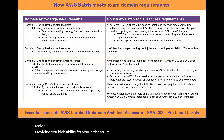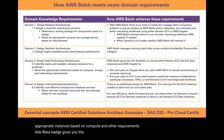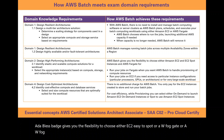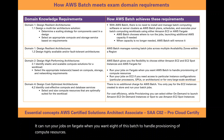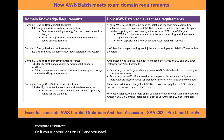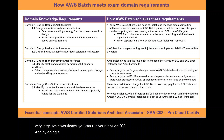From domain 2, you are required to design high performing architectures and select appropriate instances based on compute and other requirements. AWS Batch gives you the flexibility to choose either EC2, EC2 Spot, AWS Fargate, or AWS Fargate Spot. It can run your jobs on Fargate when you want AWS Batch to handle provisioning of compute resources, or if you run your jobs on EC2 and need access to particular instance configurations or very large scale workloads, you can run on EC2. This gives you the flexibility to select the appropriate instance based on the compute requirements of your workload.